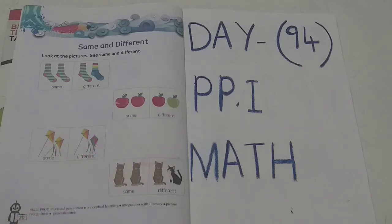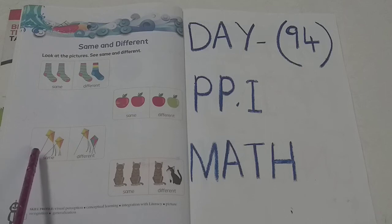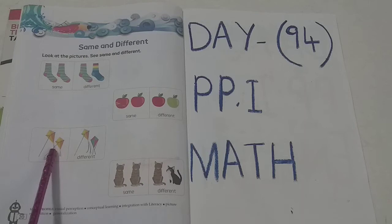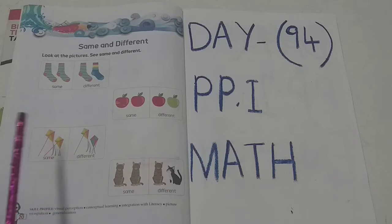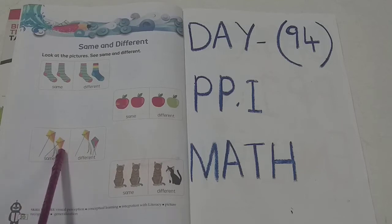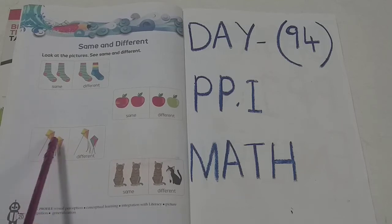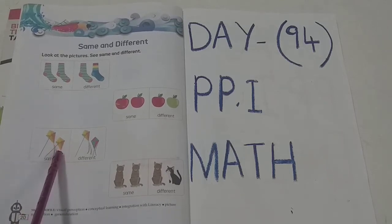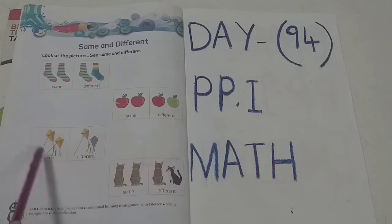Now see here. You can see this picture — here are kites. Two kites are there. So these two kites are same or different? Same. Why? Because the two kites are same in color, they are looking same. So these two kites are same.